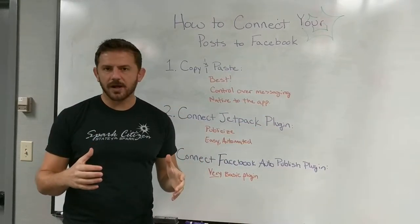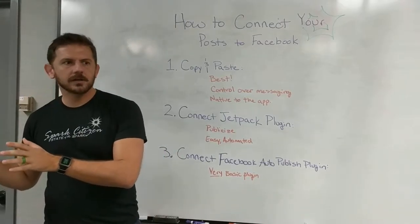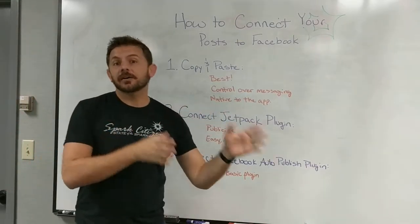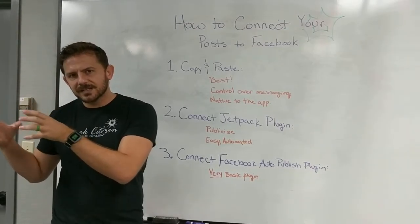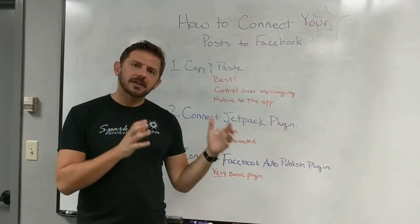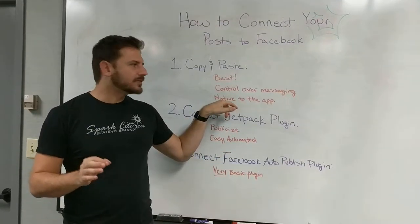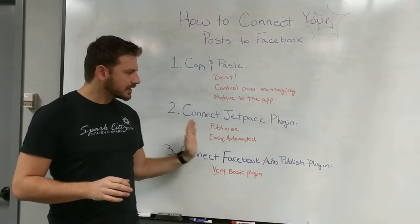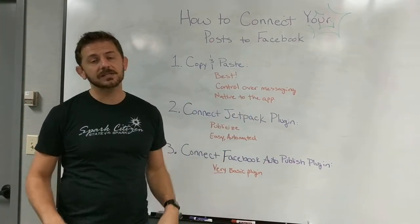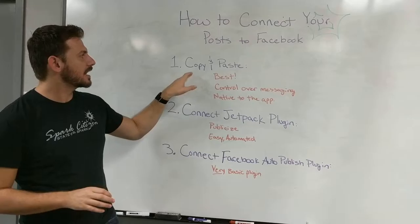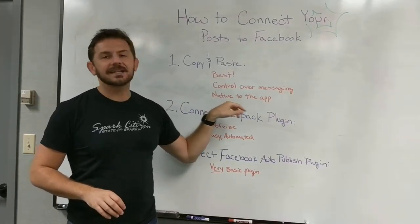Social networks are like little tribes — they can tell when you're used to working in one. For example, if you're used to Twitter, now you're on Facebook, they can tell you have a fast pace and really short snippets. On Facebook, they like to hear from you a little bit more. So you always want to act native to the app. This automation is good because it's simple — you don't have to do a lot because you're already busy with your business — but I still think it's important to take the time to copy and paste. You have control over the messaging, and it's native to the app.